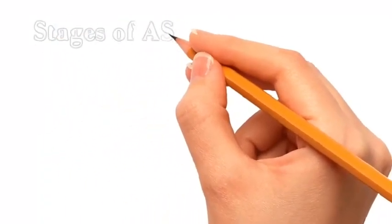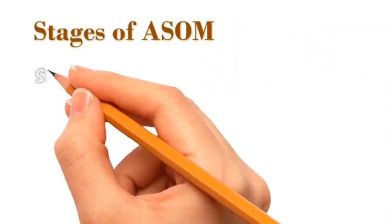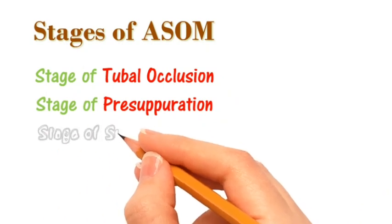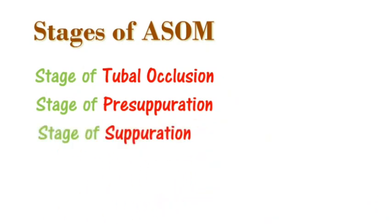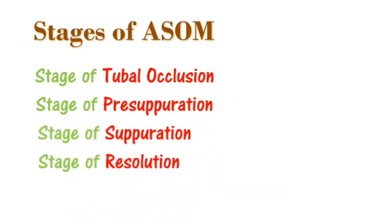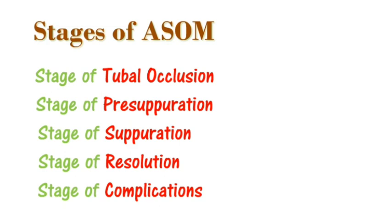Acute Suppurative Otitis Media runs through the following stages: the stage of tubal occlusion, stage of pre-suppuration, stage of suppuration, stage of resolution, and the stage of complication.